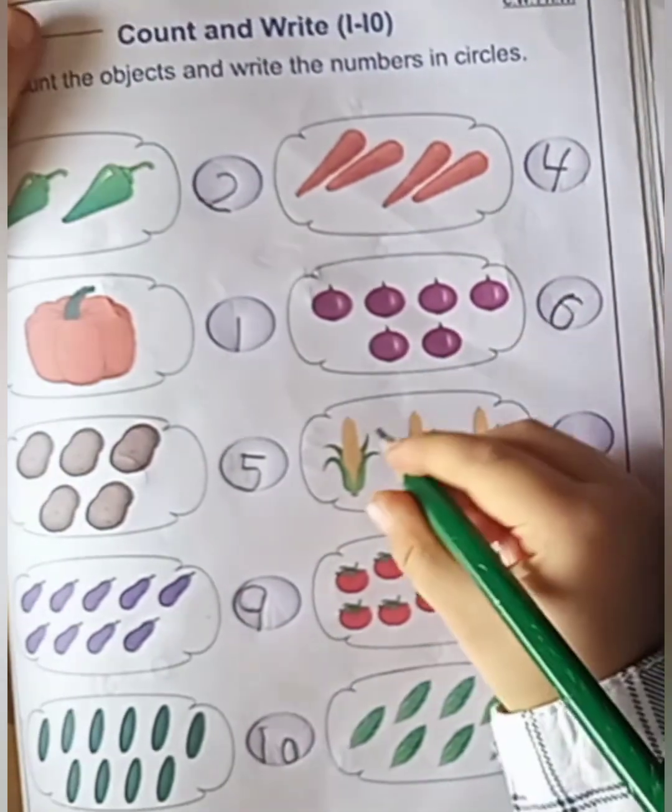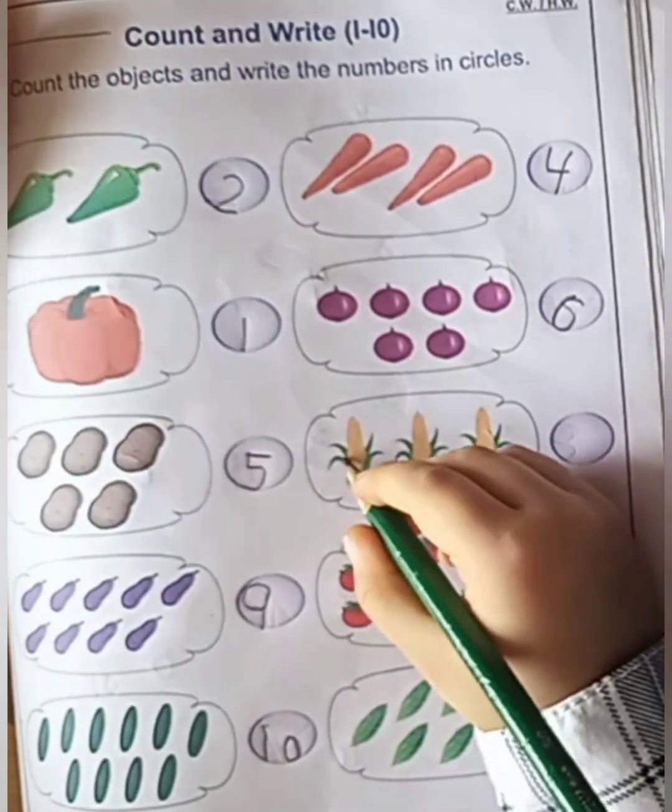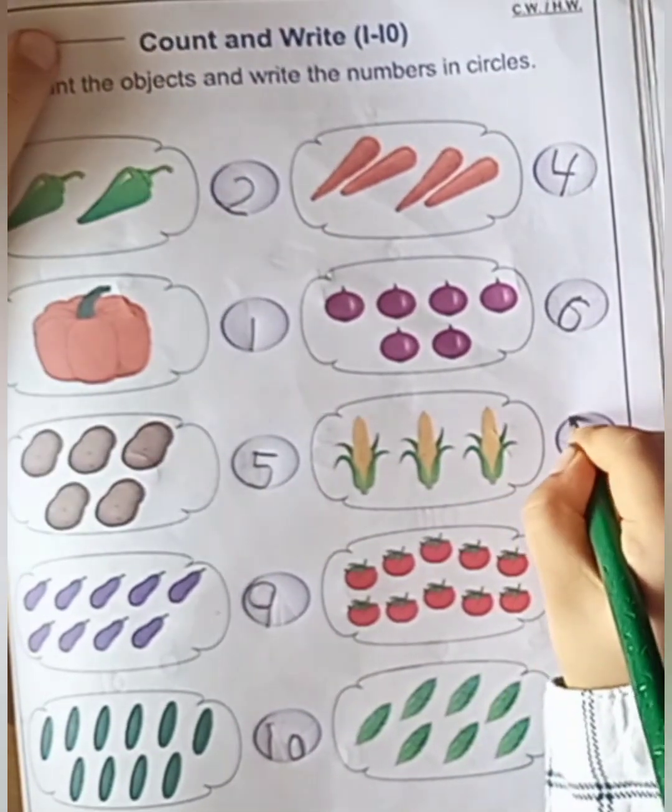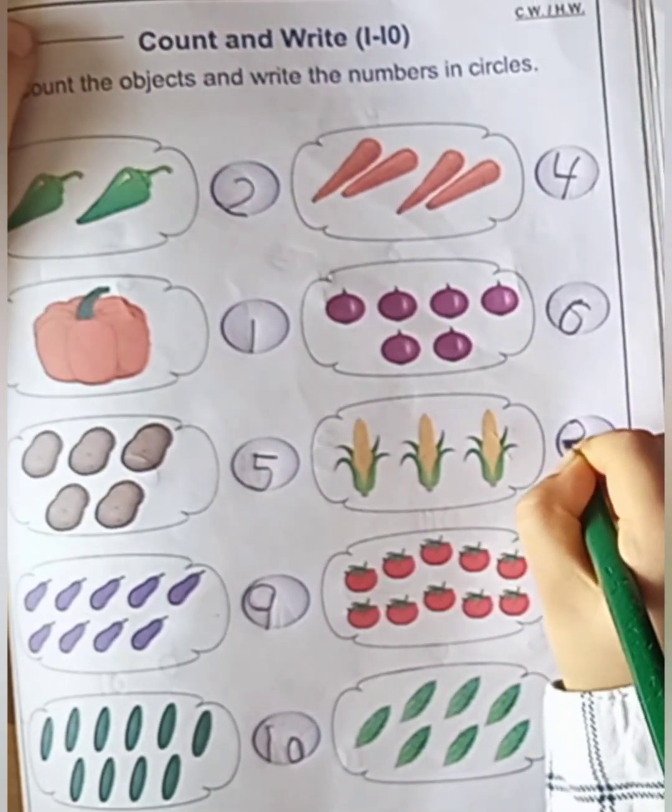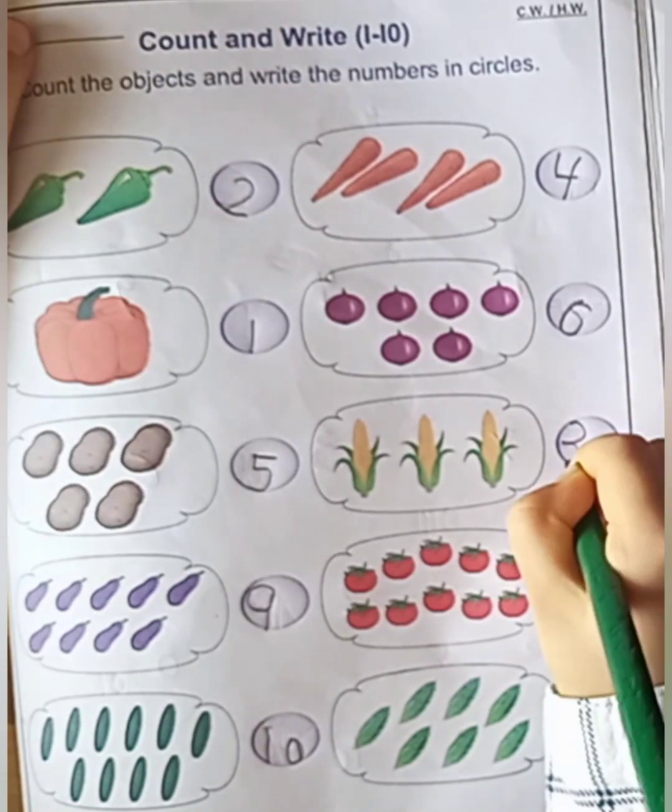Next. Corn. One, two, three. Three corn. How many corns? Three corns.